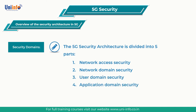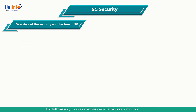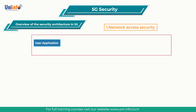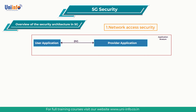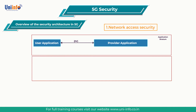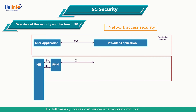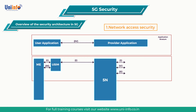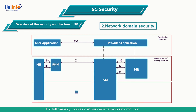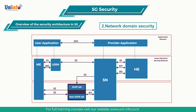The five parts are: first, network access security; second, network domain security; third, user domain security; fourth, application domain security; and fifth, SBA domain security. Network access security is the set of security features that enable a UE to authenticate and access services via the network securely, including 3GPP access and non-3GPP access, and in particular to protect against attacks on the radio interfaces. It also includes security context delivery from SN to AN for access security.